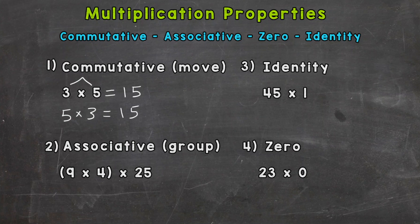Now associative, number two, think group. So we have 9 times 4 times 25, and we have the 9 and the 4 grouped here. The parentheses in that problem means we need to do that first. So we would have 9 times 4 is 36, and then we would need to multiply that 36 by 25 to give us our answer.